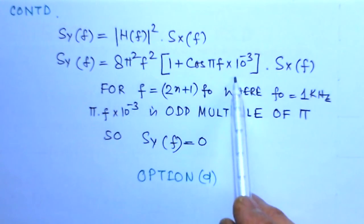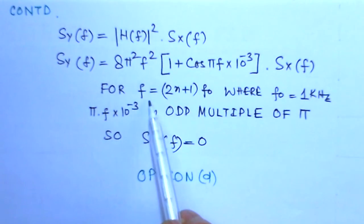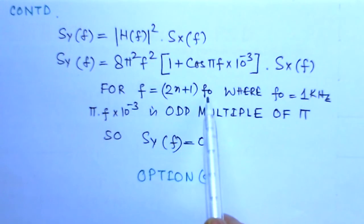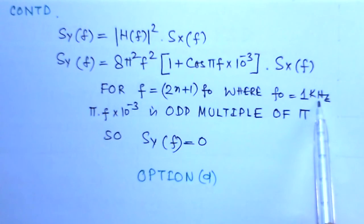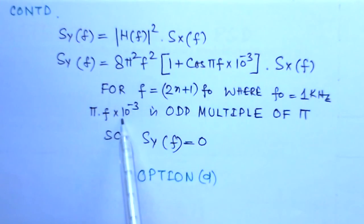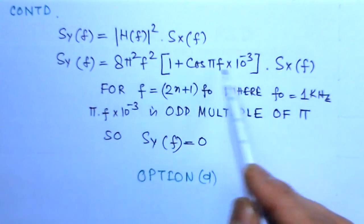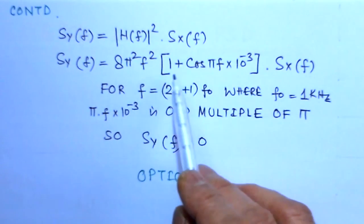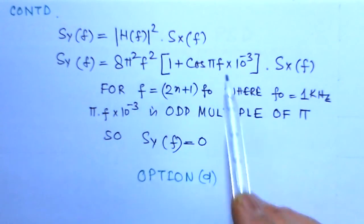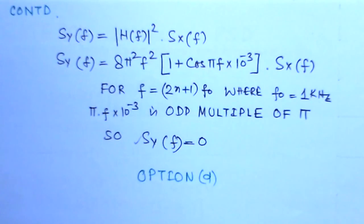If you notice from this expression that for f equals (2n+1) times f naught where f naught is 1 kHz which is given, then pi times f times 10 to the minus 3 is an odd multiple of pi. Once it is an odd multiple of pi, it will be negative, and because of the minus 1 here it will be plus 1, so the value will be 0.